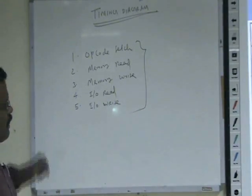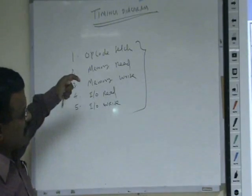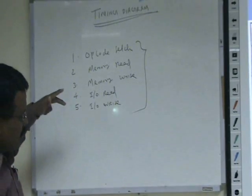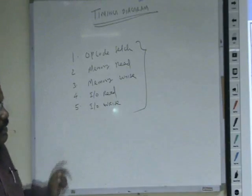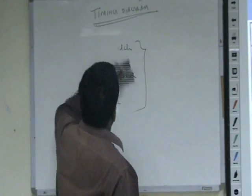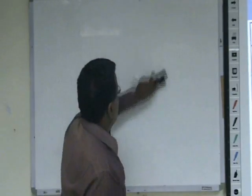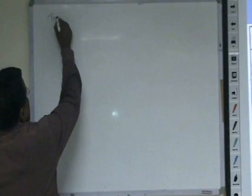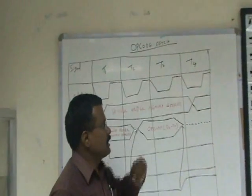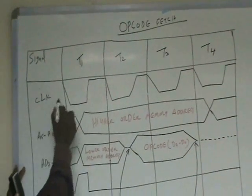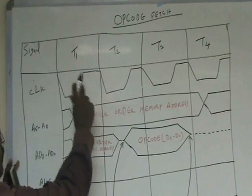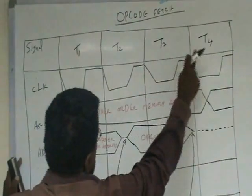Let us see the timing diagram. Whenever the microprocessor is fetching an opcode, we will discuss how the timing signals are generated and how the contents of the address and data buses are varying. This is the timing diagram for the opcode fetch cycle. As far as the 8085 is concerned, it requires 4 T-states to execute the instruction. The first signal is the clock, and from one starting point to the next is called one T-state: T1, T2, T3, and T4.